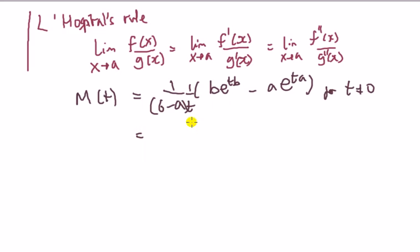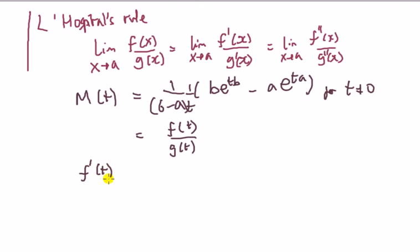Right now, the numerator there is like my f(t), and the bottom bit is like my g(t). So the derivative of the top with respect to t — you can see it straight away — but wait, that's not right, because the MGF doesn't have this form here.